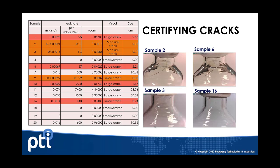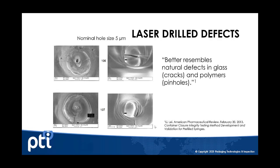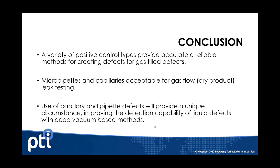In summary, there are a variety of ways that we can produce defects. You can simulate them with a gas-space container using a capillary or a pipette. As you move into a liquid-fill container, simulating that defect with a more real-world defect is critical to properly validate a test method. Micropipettes and capillaries are only appropriate for dry applications, and for liquid-fill containers, the use of laser drilled defects or other real-world defect types are critical to validate that test method.